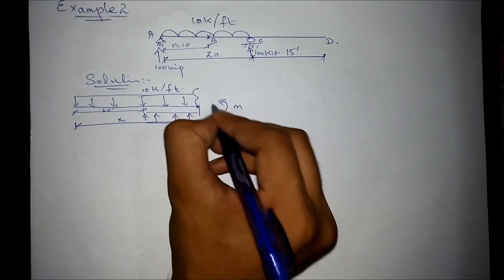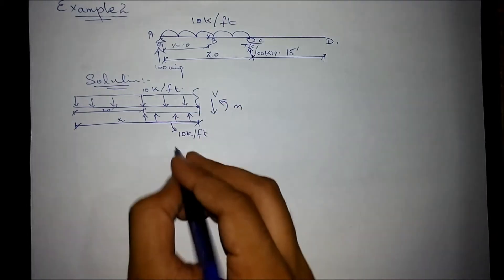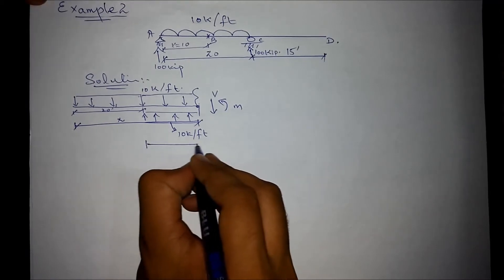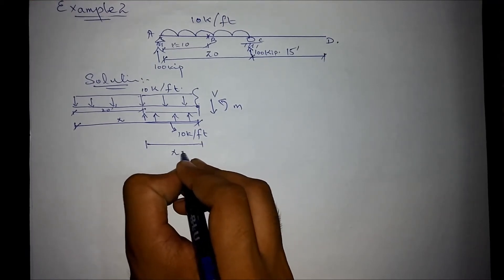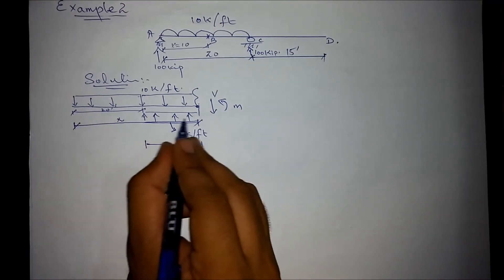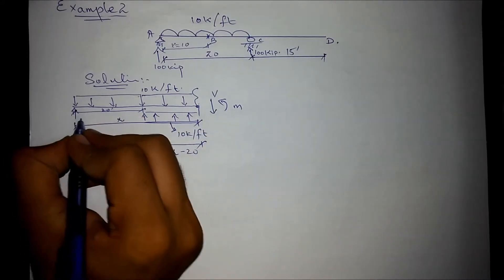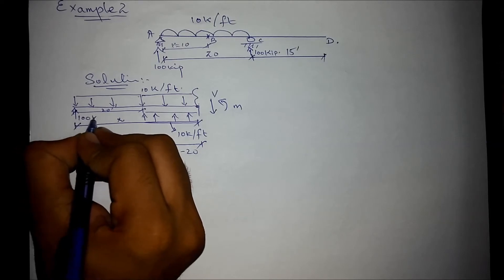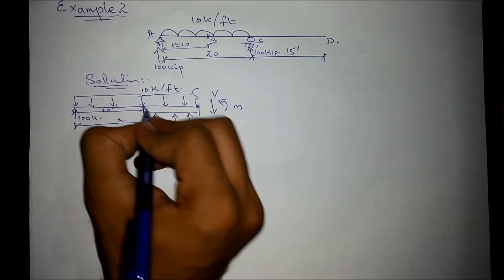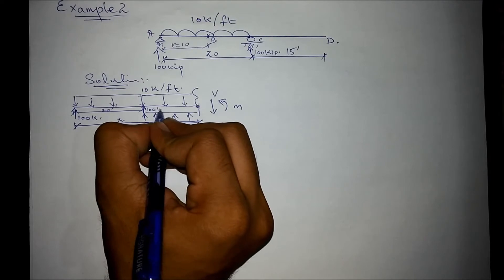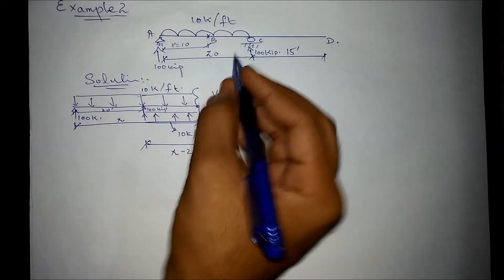Here, the moment, the shear. This distance would be the distance x minus 20 feet. This is the distance x and this is 20 feet. So this distance would definitely be x, and this is 100 kip reaction force and here again 100 kip reaction force.